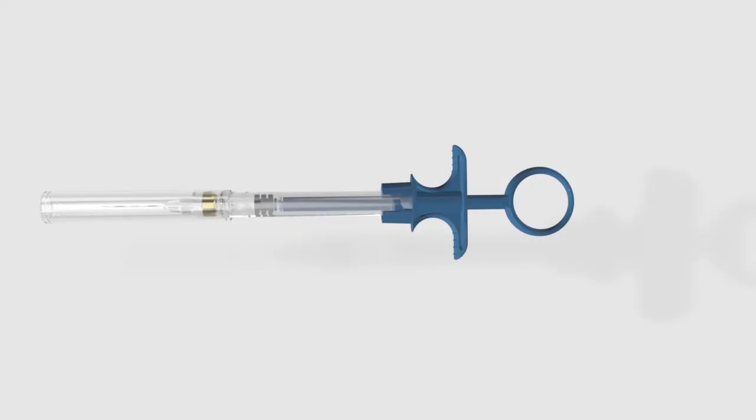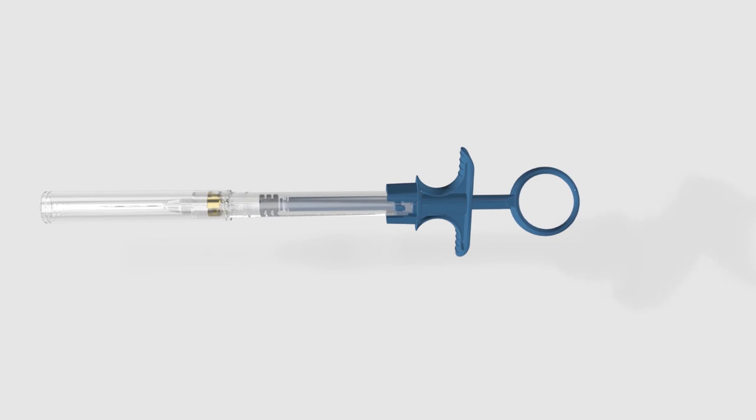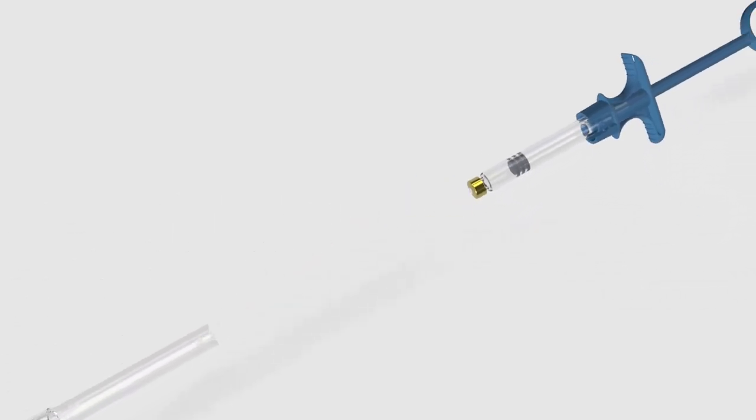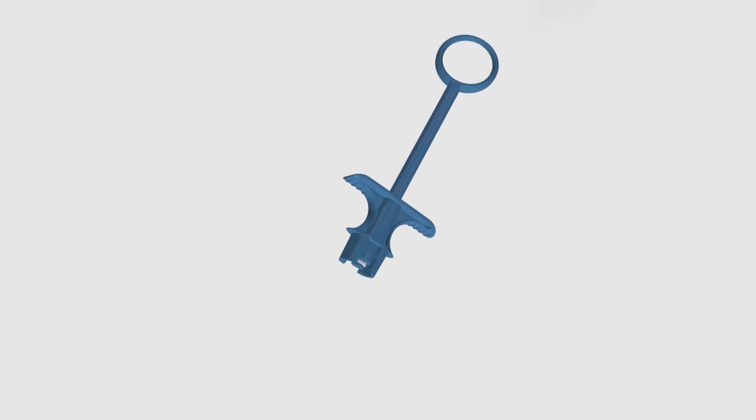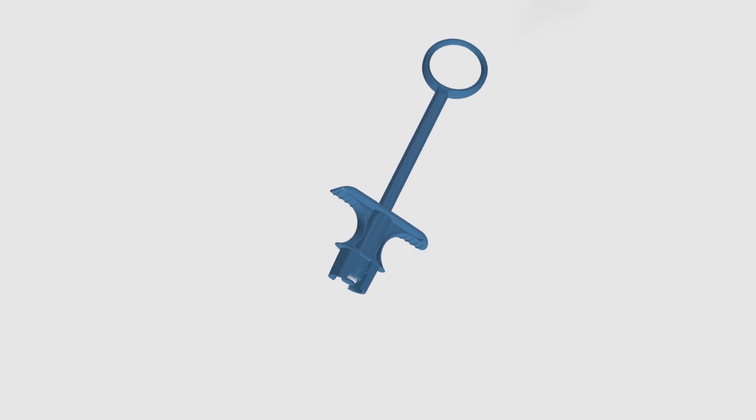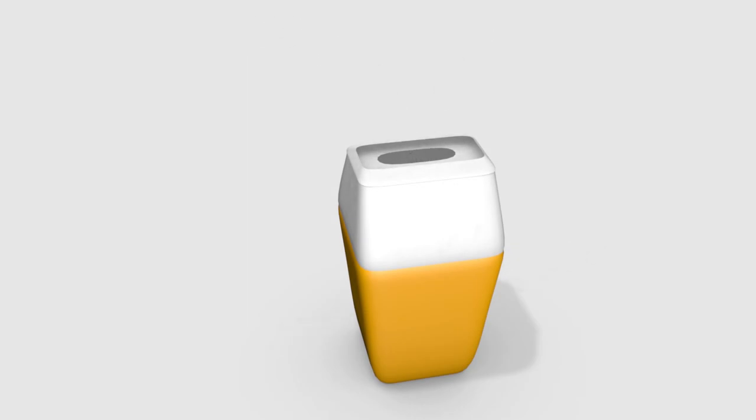To remove the cartridge for disposal, grip the finger holder, turn counter-clockwise and pull until the pins escape from the notches. The cartridge will be automatically extracted from the barrel when the plunger is withdrawn. The device is now ready for disposal.